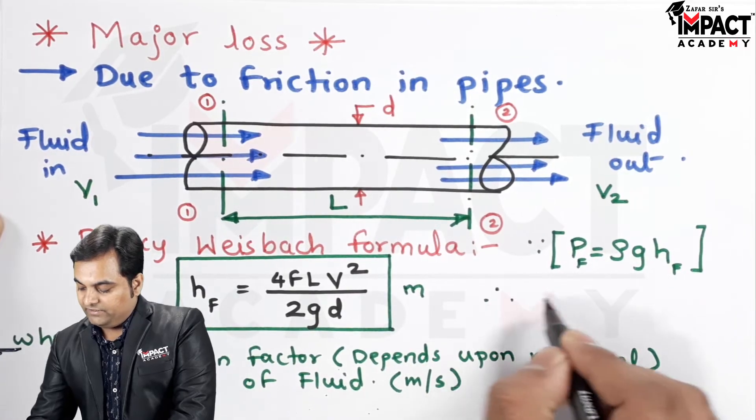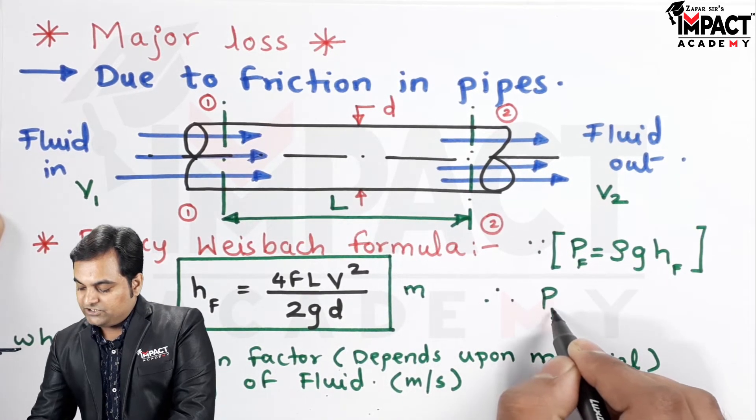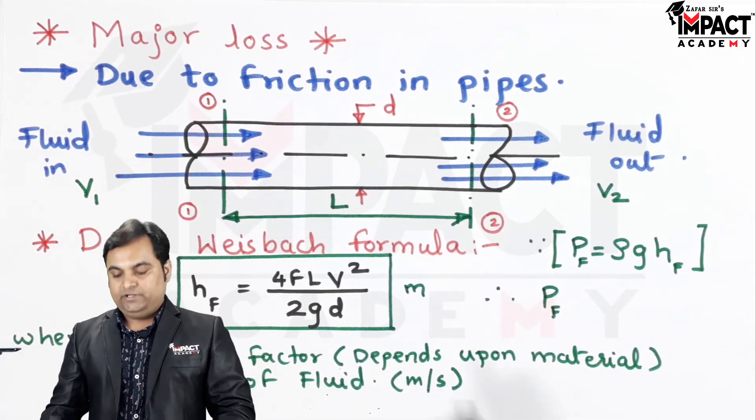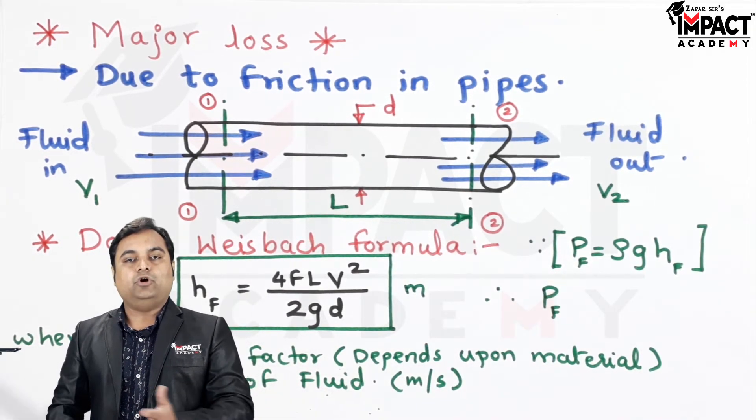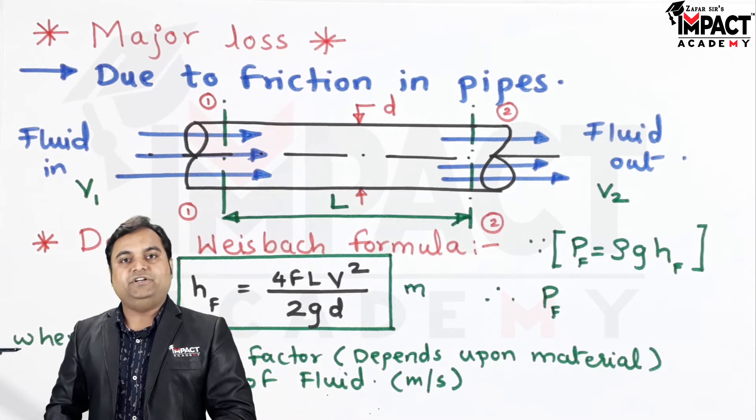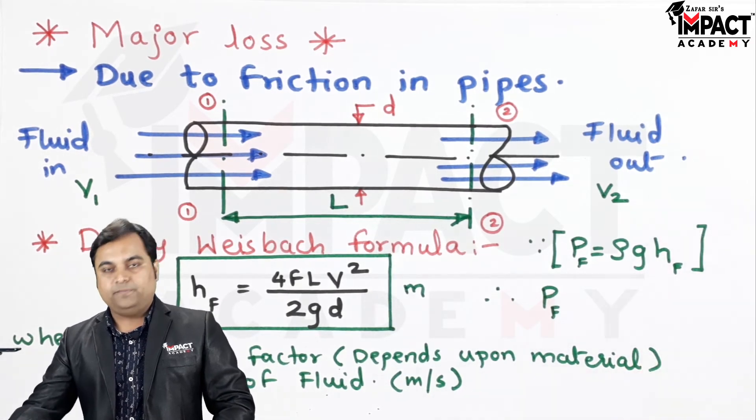Out of that we can get the value of the pressure intensity which is lost due to friction. That is when the fluid is flowing from point 1 to 2, there will be some loss in the pressure intensity which can be calculated by using this formula.